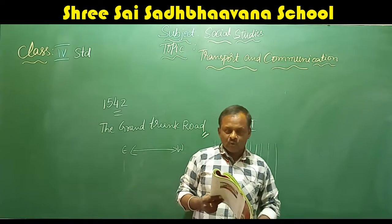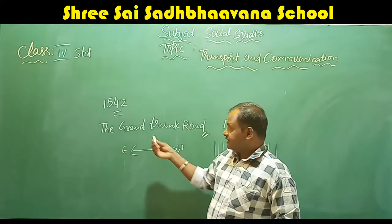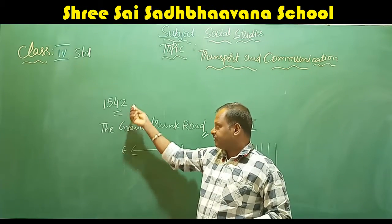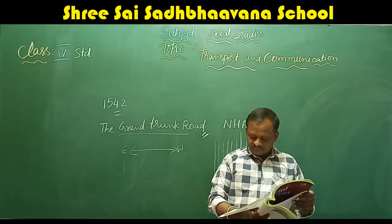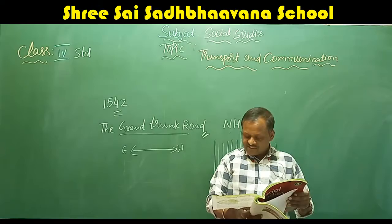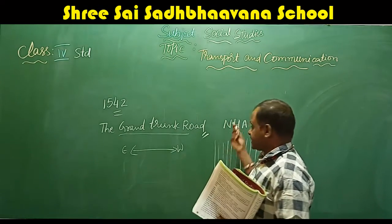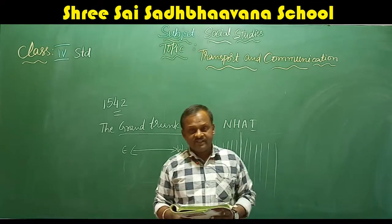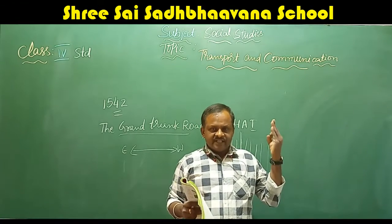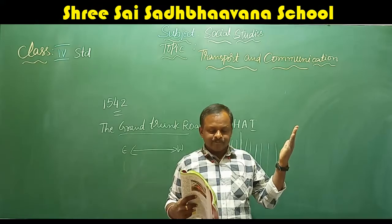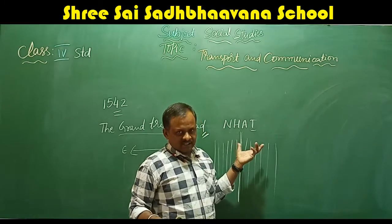This is about road transport. India has five types of roads: expressways, national highways, state highways, district roads and village roads. The Grand Trunk Road was started by Mughal Emperor Sher Shah Suri. The National Highway Authority of India maintains the national highways. These are the five types of roads in India.